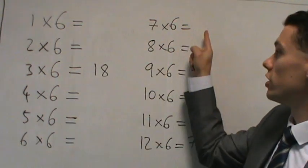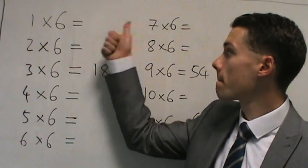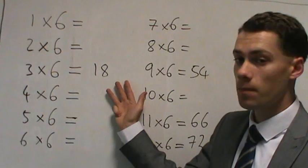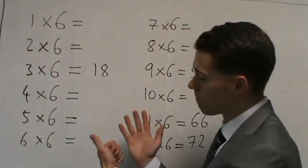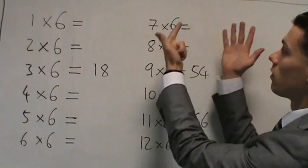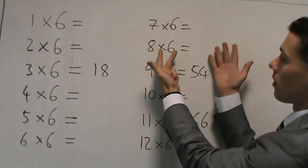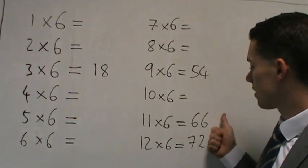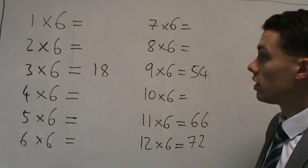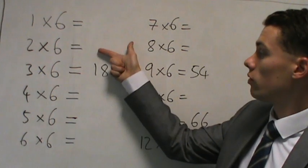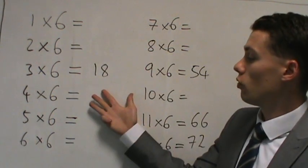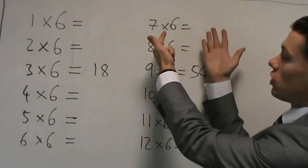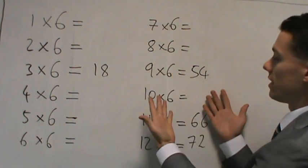6 and 42, so let's try again. 18, 54, 66 and 72. So hopefully you got 6, 12, 24, 30, 36, 42, 48 and 60.